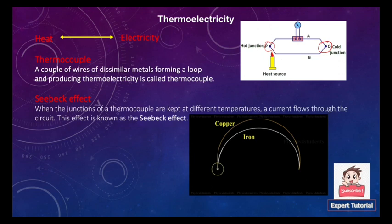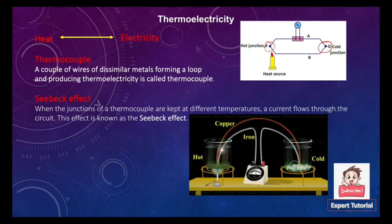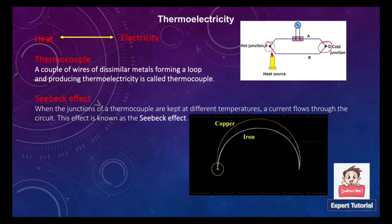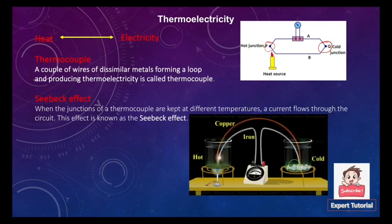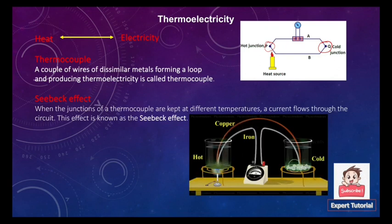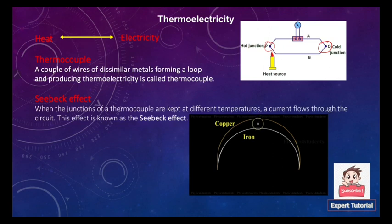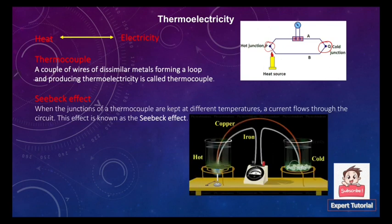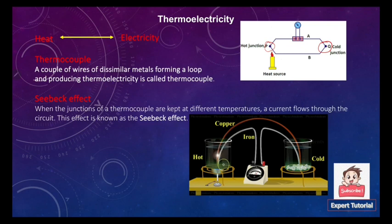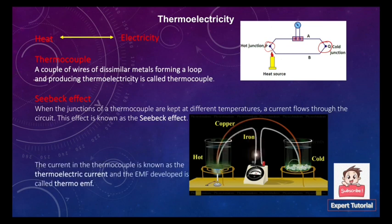Looking at the diagram, there are two wires — one made of copper and another of iron — forming a thermocouple with a hot junction and a cold junction. When the junctions are kept at different temperatures, a current flows from copper to iron across the hot junction and from iron to copper at the cold junction. The deflection of the galvanometer indicates that current is flowing inside the circuit.